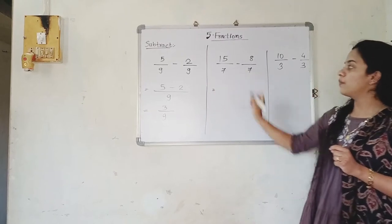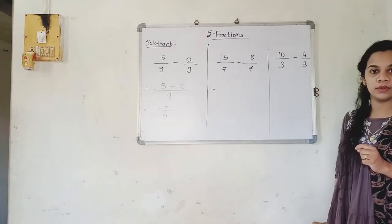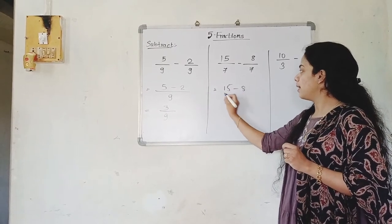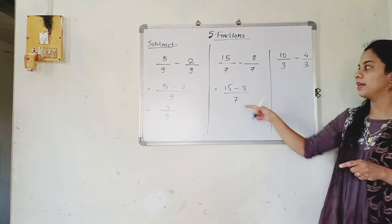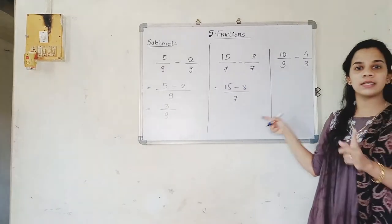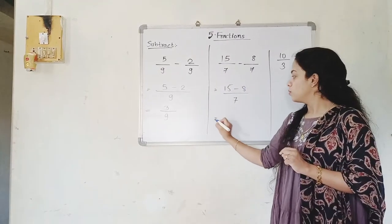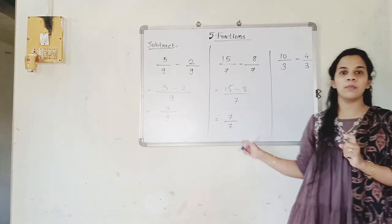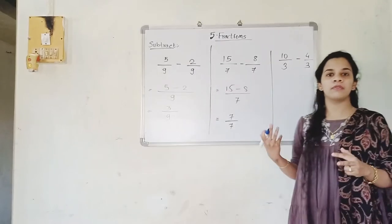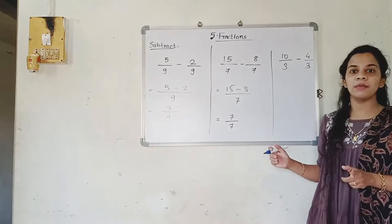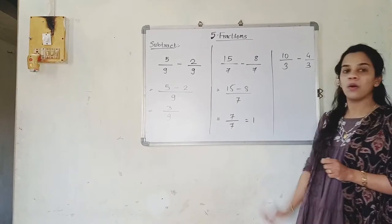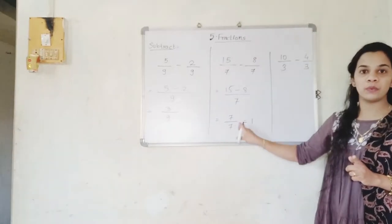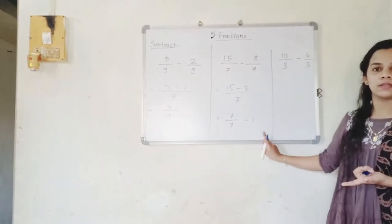The next question: 15 upon 7 minus 8 upon 7. We write 15 minus 8 upon 7, keeping 7 as the common denominator since both are like fractions. 15 minus 8 is 7 upon 7. When you get a situation like 7 upon 7, 6 upon 6, or 25 upon 25, the answer will always be 1. So the final answer is 1.